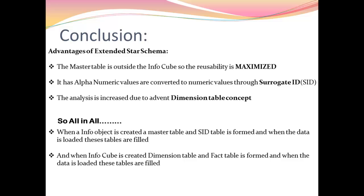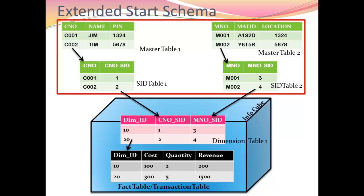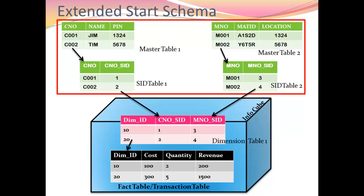In conclusion, the advantages of extended star schema are: the master table is outside the info cube so reusability is maximized; alphanumeric values are converted to numeric values through the surrogate ID; and with the help of dimension tables, analysis is greatly improved. When an info object is created, a master table and SID table are generated, and when the info object is loaded, they are filled. Similarly, when an info cube is created, dimension tables and fact tables are created, and when the cube is loaded, they are filled.